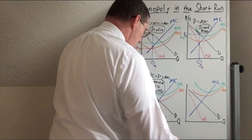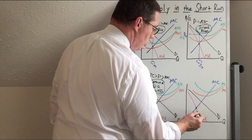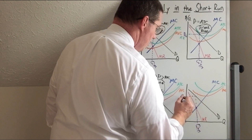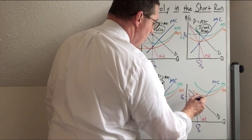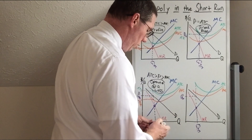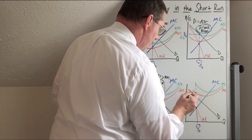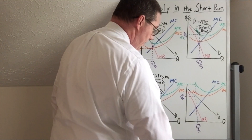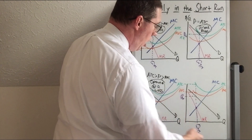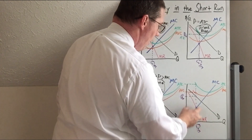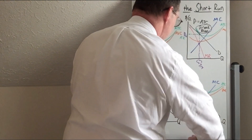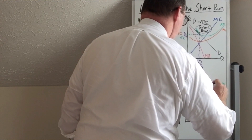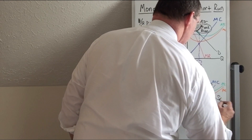In this fourth situation, here's where marginal revenue equals marginal cost — the profit-maximizing quantity, or really the loss-minimizing quantity. Going up to the demand curve gives the profit-maximizing price. But check this out: their price is lower than their average variable cost, and also lower than their average total cost. If they continue operating, they'll keep accumulating more loss because variable cost exceeds revenues. Therefore, this is the shutdown situation — average total cost is greater than average variable cost, both greater than price.